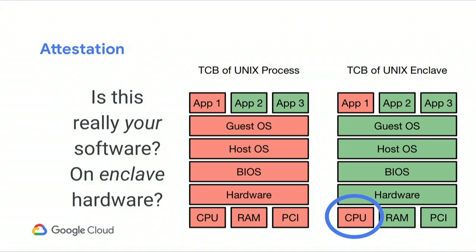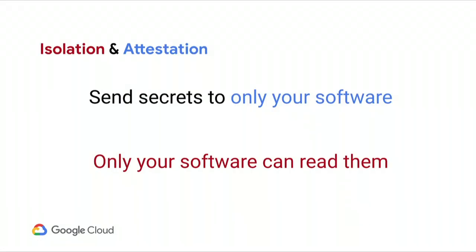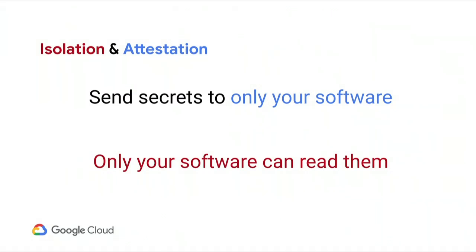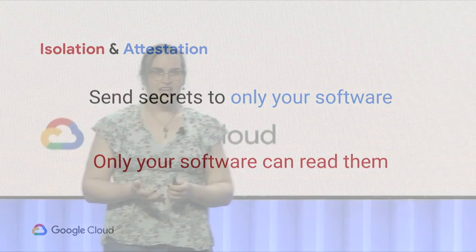The second component of an enclave is attestation. Attestation aims to answer the question with cryptographic guarantees that the software you're talking to is really the software you want to be talking to, and that it is running on the hardware that you expect to be giving you these trusted execution environment guarantees. When you put these two things together, you're able to make the statement that you send secrets only to your software, and only your software can read them. That's really important to potential customers who want to move to cloud.